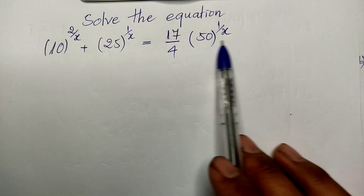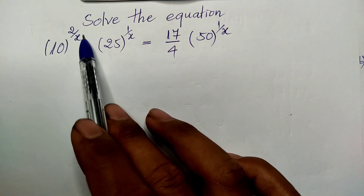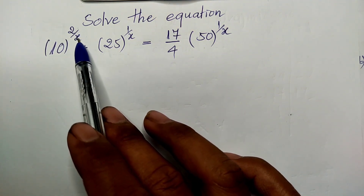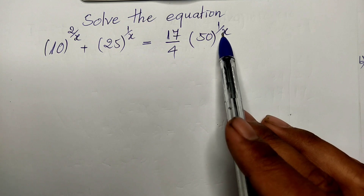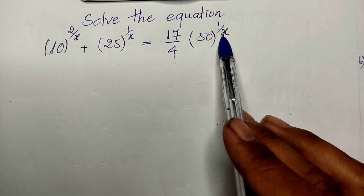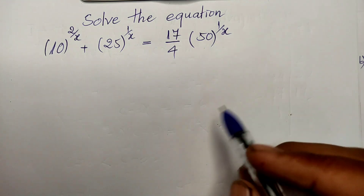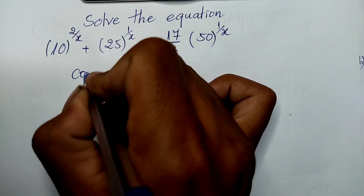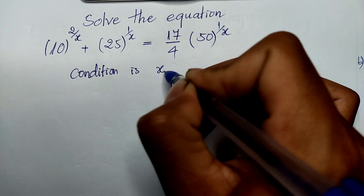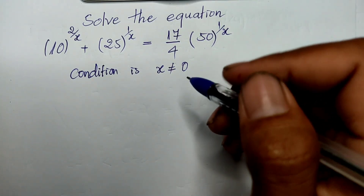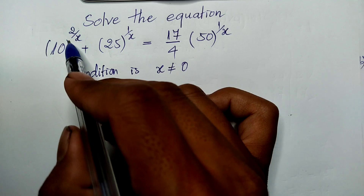Before we solve this equation, we must take the condition. The exponent is a fraction with denominator h, and each term has h in the denominator. So before we solve it, we must state the condition: h is not equal to 0.